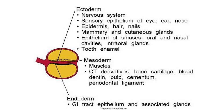There are three germ layers in triploblastic organisms: ectoderm, mesoderm, and endoderm. The ectoderm gives rise to nervous tissue, sensory epithelium of eyes, ears, and nose, as well as epidermis, hair, nails, mammary and cutaneous glands, epithelium of sinuses, oral and nasal cavities, intraoral glands, and tooth enamel. Collectively, ectoderm gives rise to sensory ectoderm, neuroectoderm, and somatoectoderm.